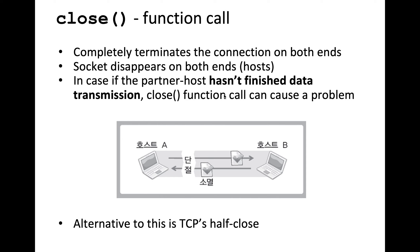If a partner host hasn't finished data transmission, a close() function call can cause a problem. For example, if host A and host B are exchanging data, and host B hasn't finished transferring data to host A, but host A calls close(), then host B will have a problem — it will not be able to complete the file transfer because the connection has been cut. The way to solve that is an approach called TCP half-close.